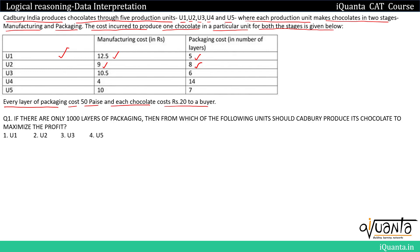The selling price of every chocolate is 20 rupees because it is costing 20 rupees to a buyer — so that is the SP. Every layer of packaging costs 50 paise. So if we want to get a chocolate prepared from U1, we pay 12.5 rupees as manufacturing cost. Since we require 5 layers of packaging, the packaging cost is 5 × 0.5 = 2.5 rupees per chocolate in U1.